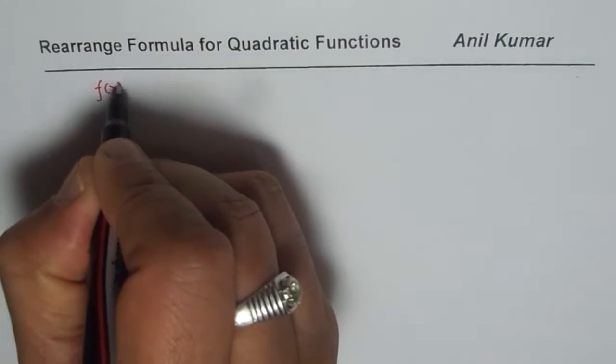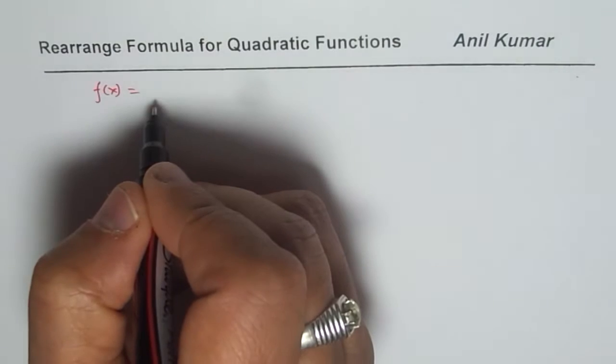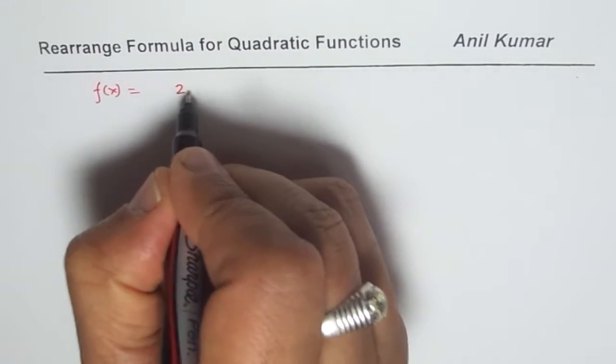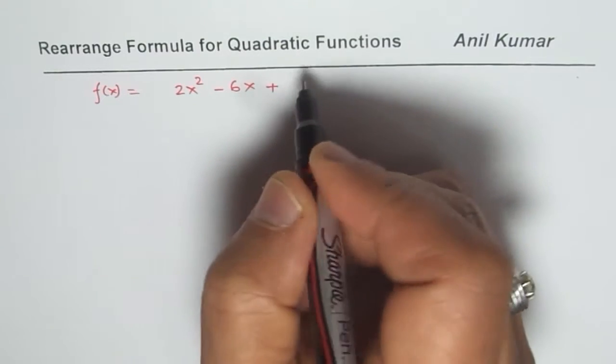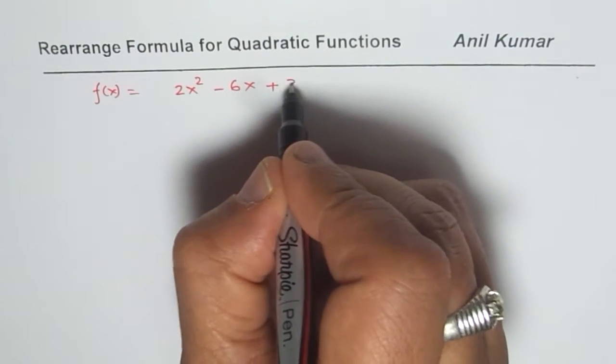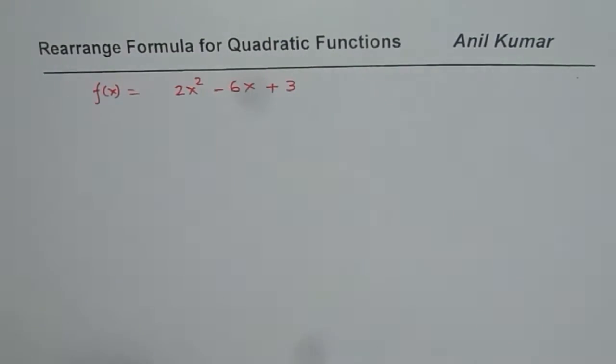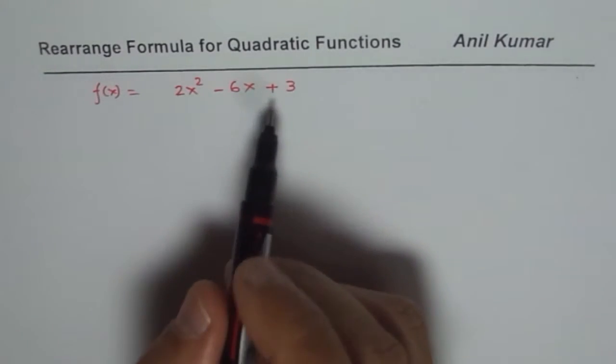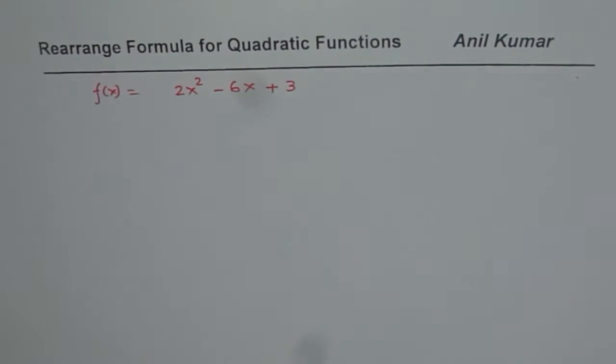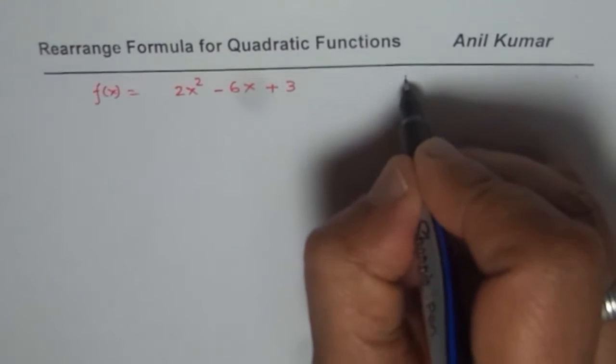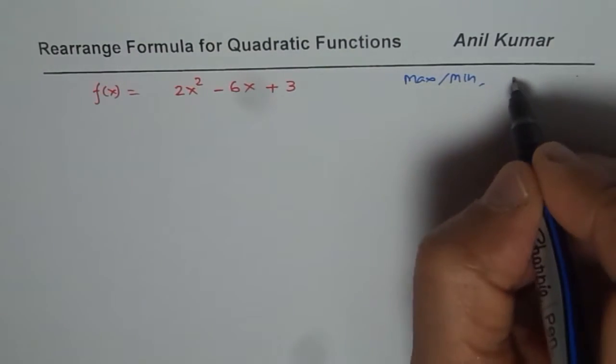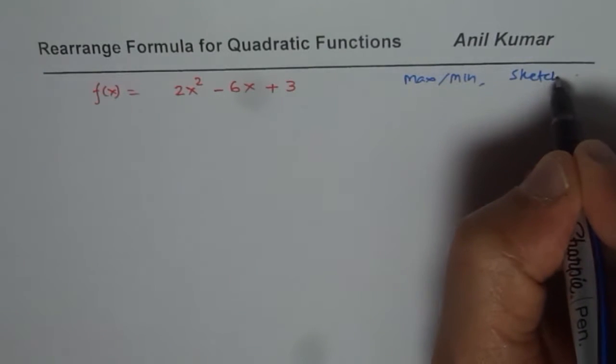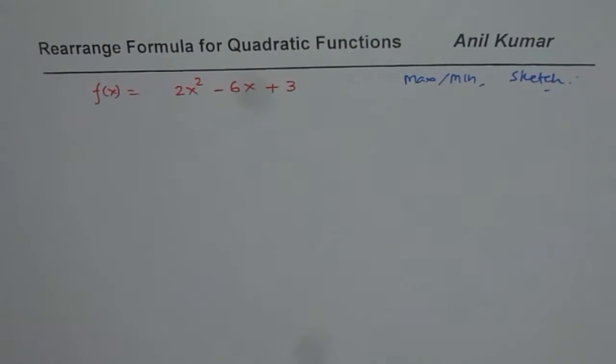Let's say the function f(x), I could have written y equals to also, is equals to 2x squared minus 6x plus 3. The idea is to find the maximum or minimum, and then we have to sketch the parabola. So that is the idea to do this exercise.